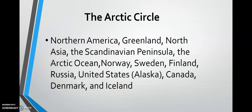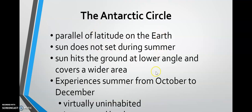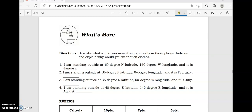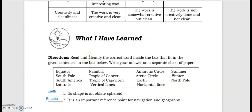The antarctic circle is the ice-covered landmass and a parallel of latitude on Earth. Just like the arctic circle, the sun does not set during summer and hits the ground at a lower angle, covering a wider area — so it remains very cold despite the sun not setting. Summer in the antarctic circle runs from October to December. The region is virtually uninhabited because the area is extremely cold.